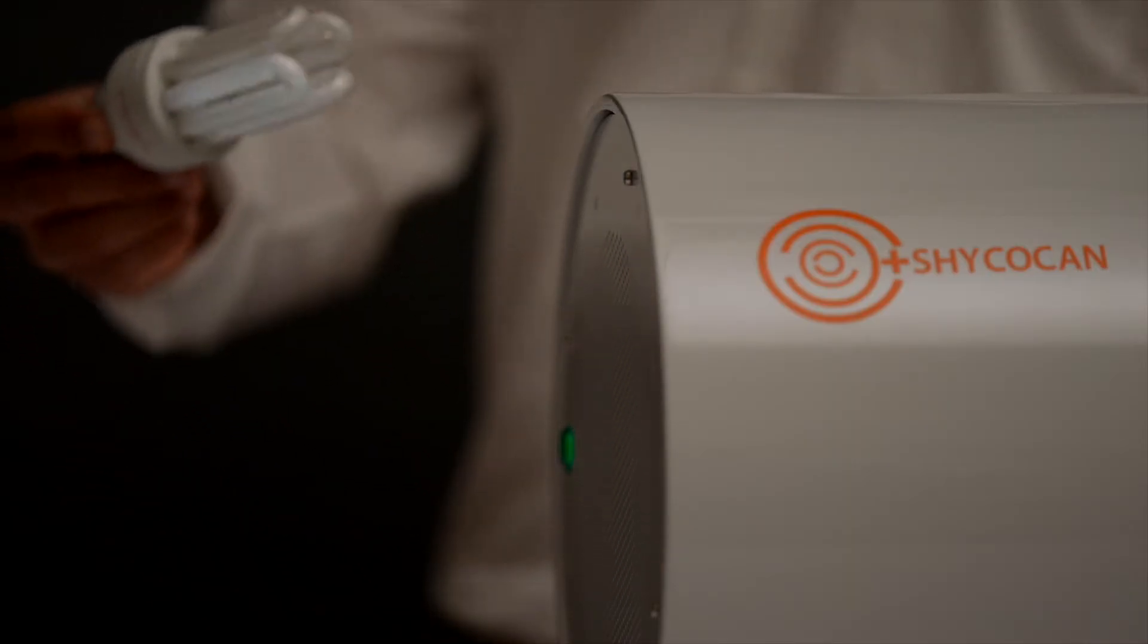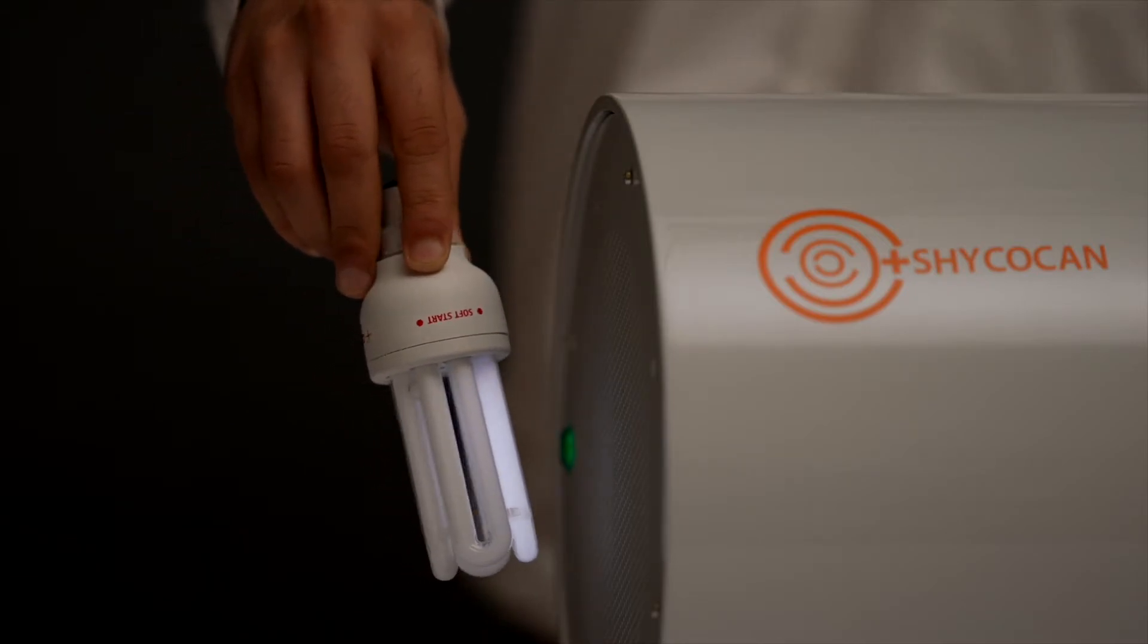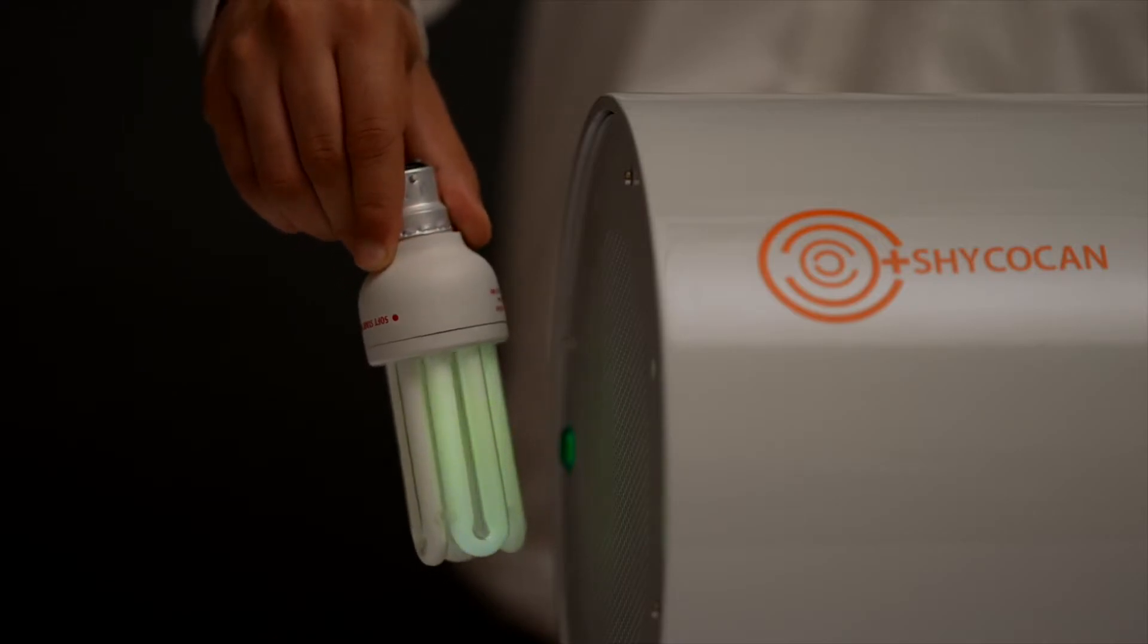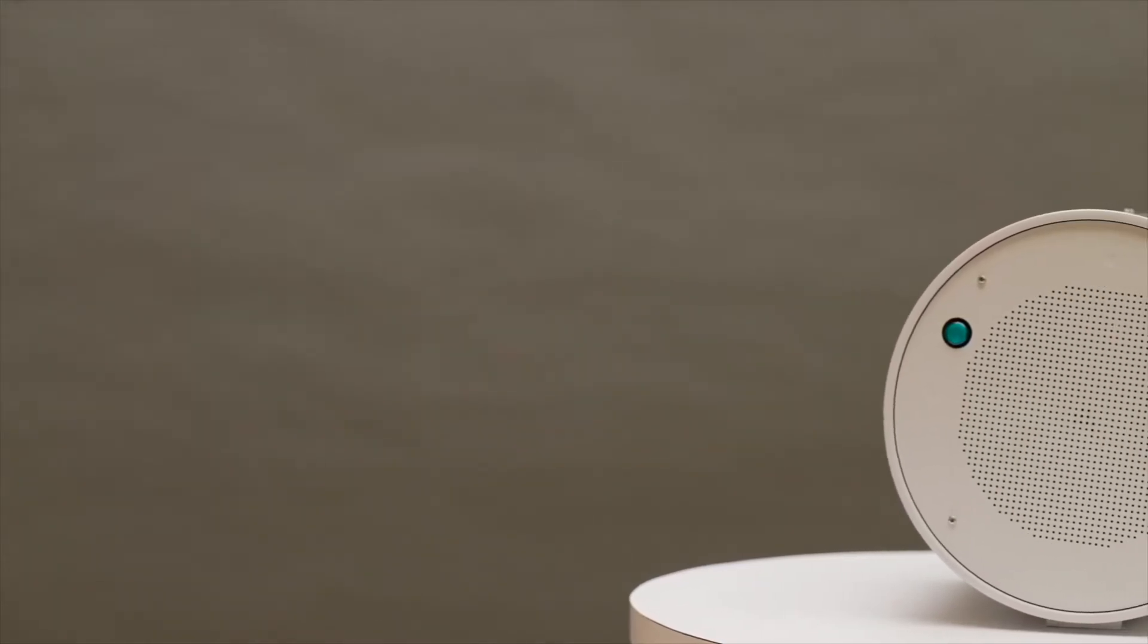Take a CFL bulb or tube light and hold it in front of the device. The bulb will start flickering—that's a sign that electrons are being produced and that your Shagokan is ready to keep you safe. The Shagokan starts working pretty much instantly, protecting an enclosed space within a minute.